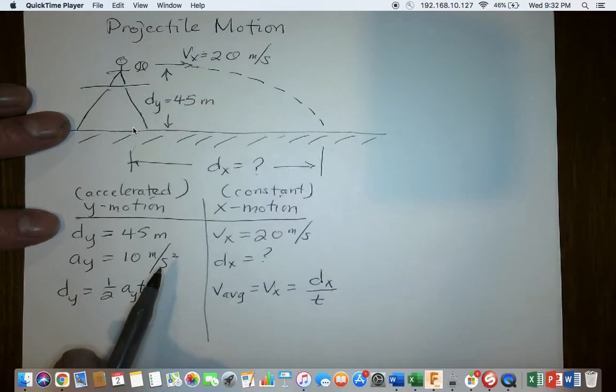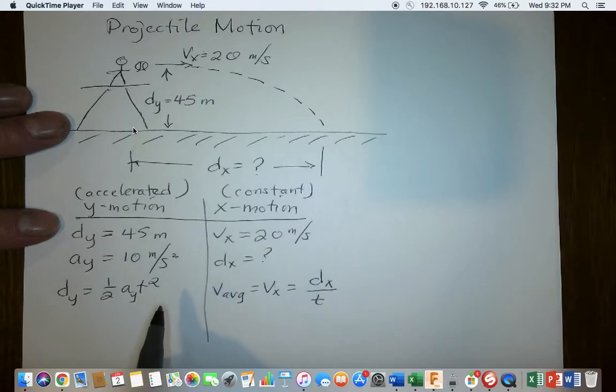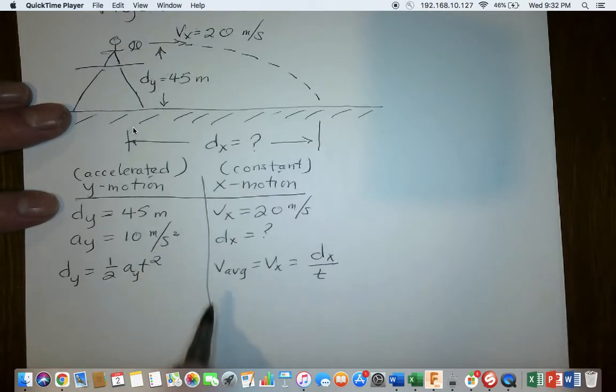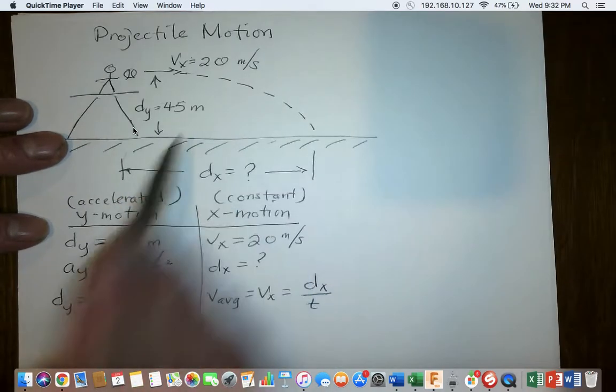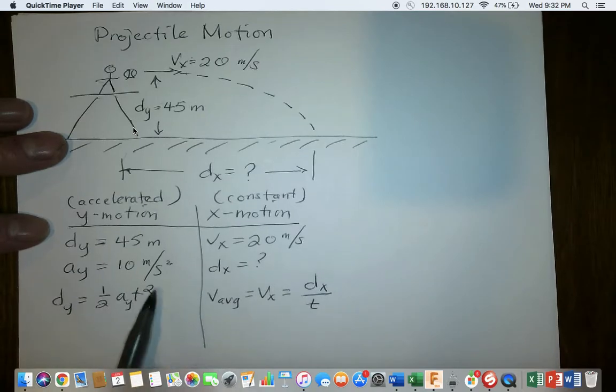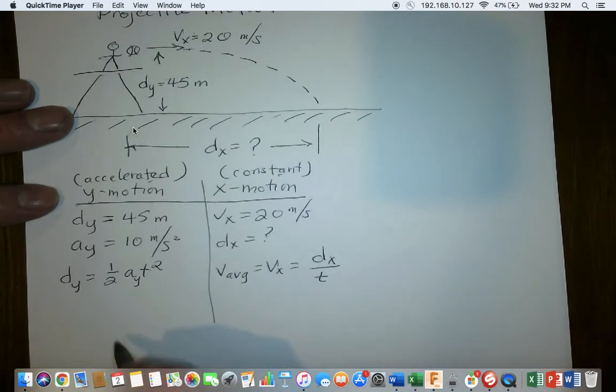I think that's all we know. Now let's start with the Y motion. There's a reason to do that in this case, and this maybe just comes from experience that since we know the height, we know the acceleration due to gravity, we can solve for the time. It's already known, and the time is going to connect the Y motion to the X motion. That means that the time is the same in both the Y and the X direction.